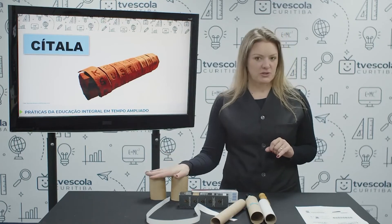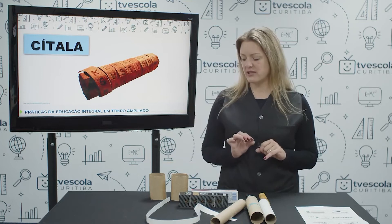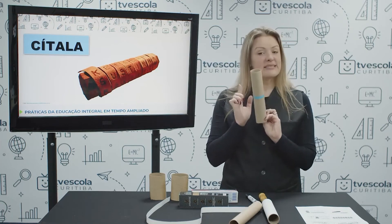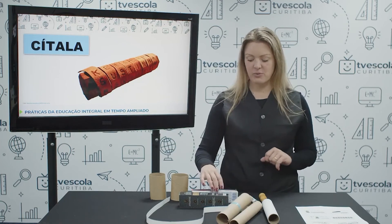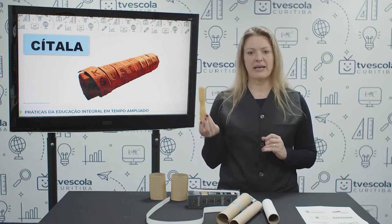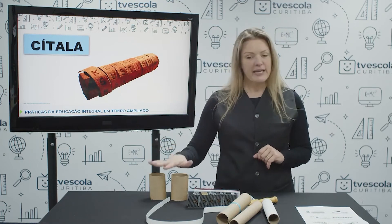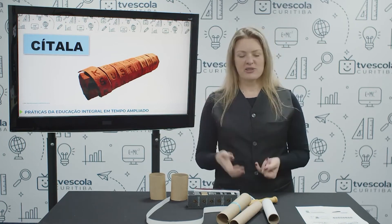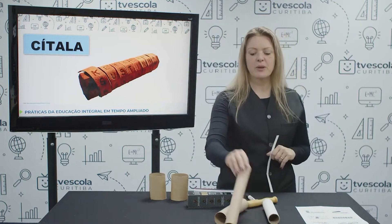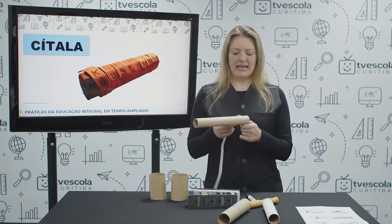Vocês vão precisar de um ou dois rolos de papel higiênico — dois fica um pouco mais fácil de fazer a Cítala. Se vocês não tiverem rolos de papel higiênico, vocês podem usar caixa de remédio, caixa de creme dental, ou se tiverem um bastão de madeira, também serve para fazer a Cítala e entender como ela funciona.